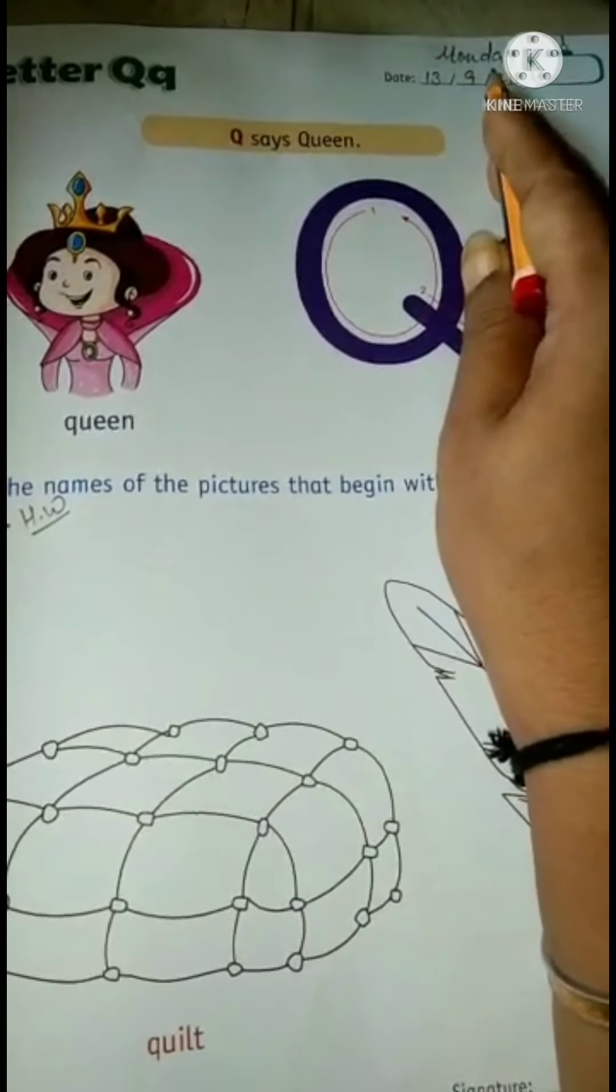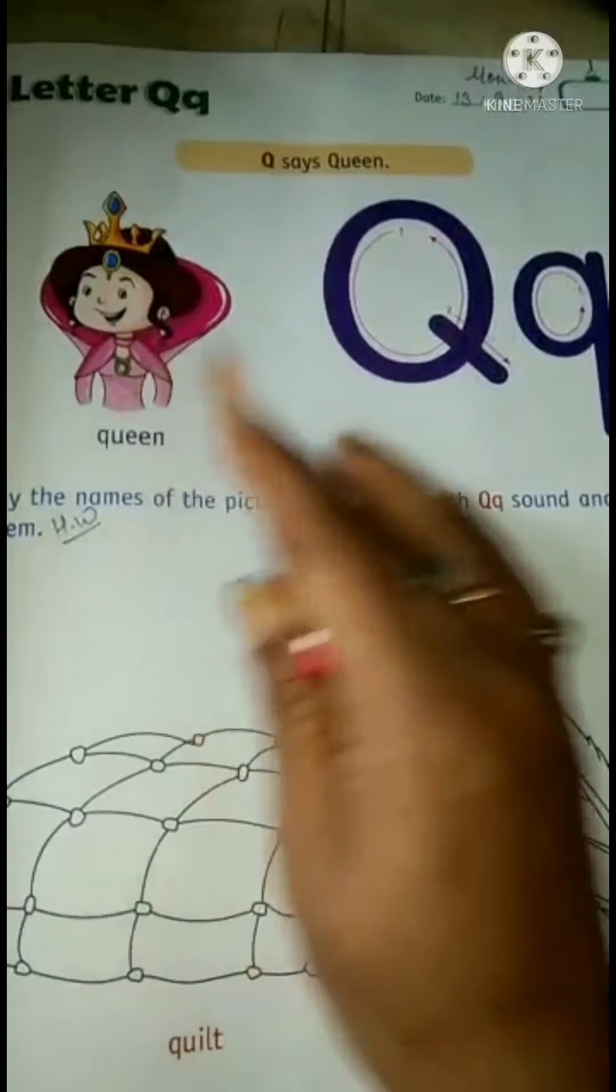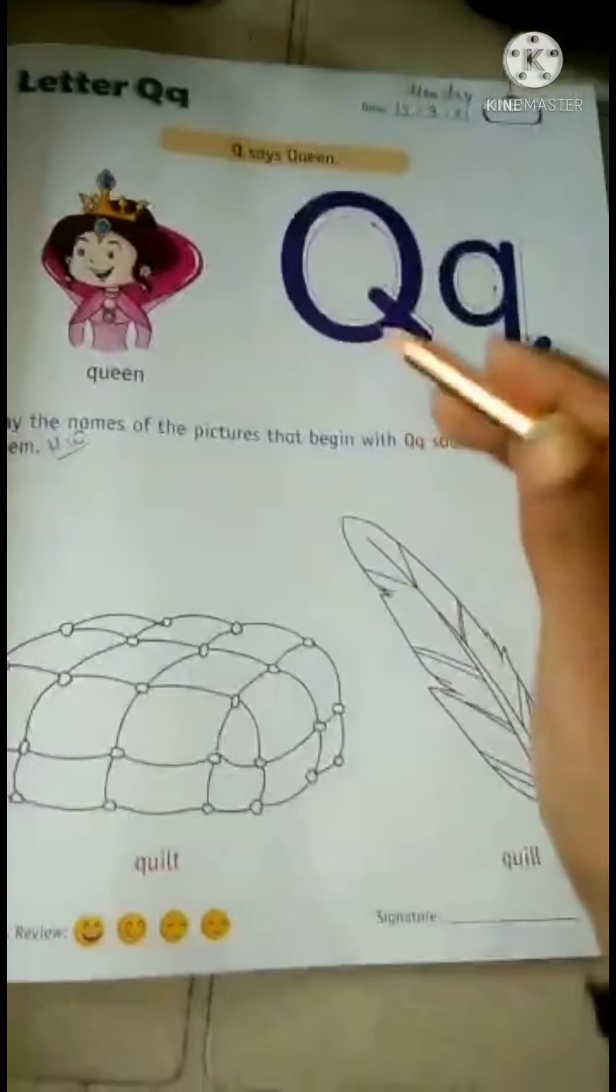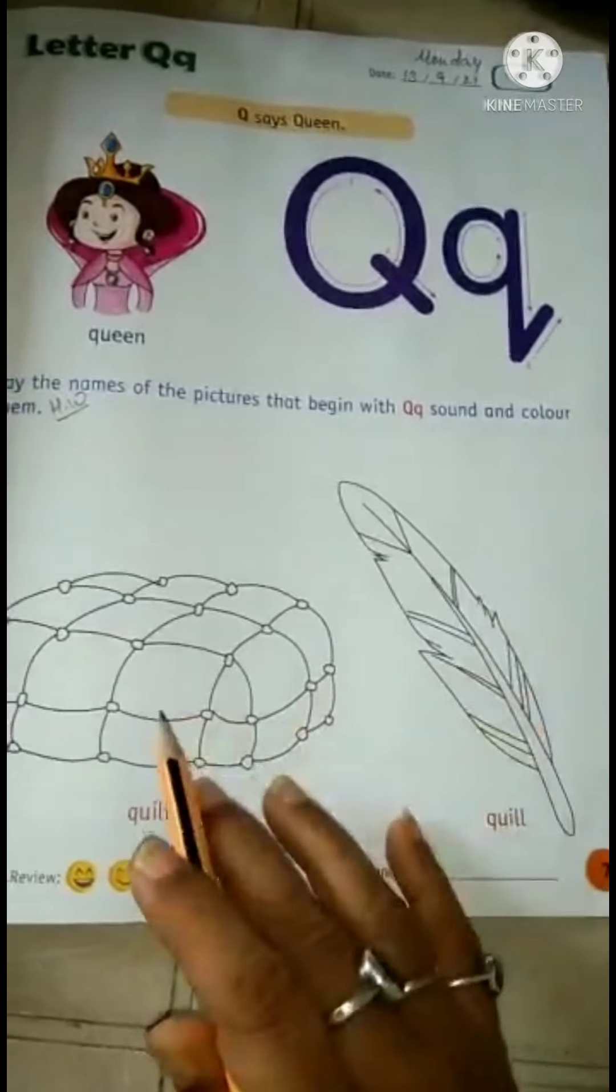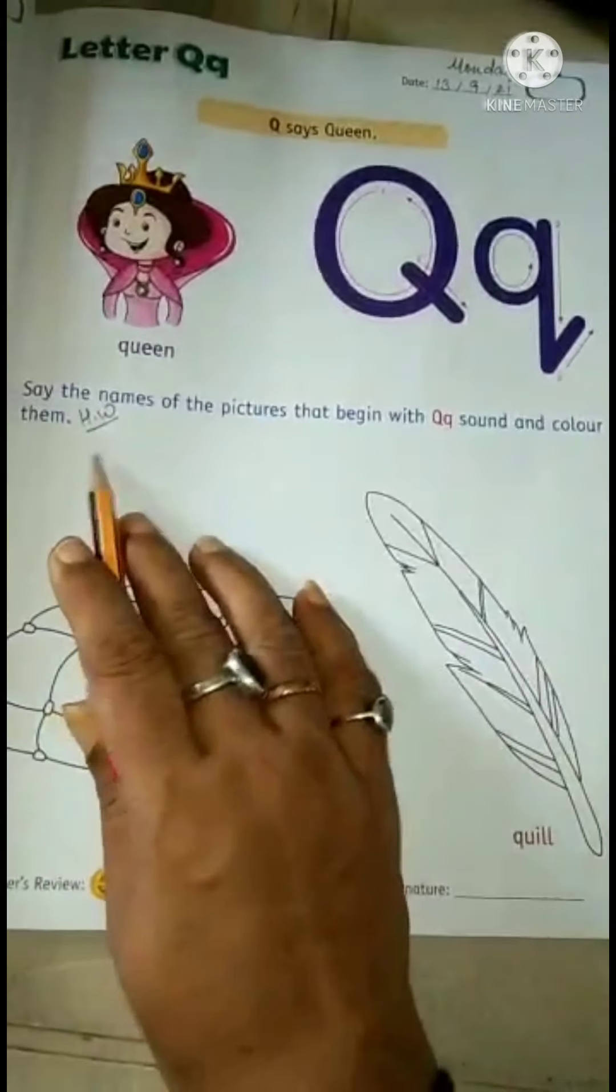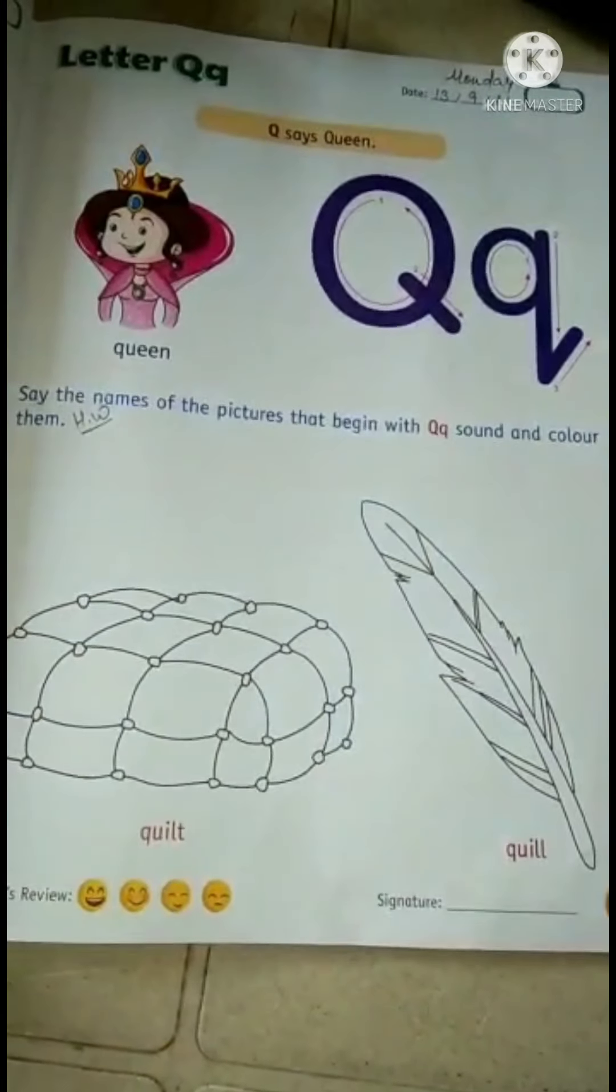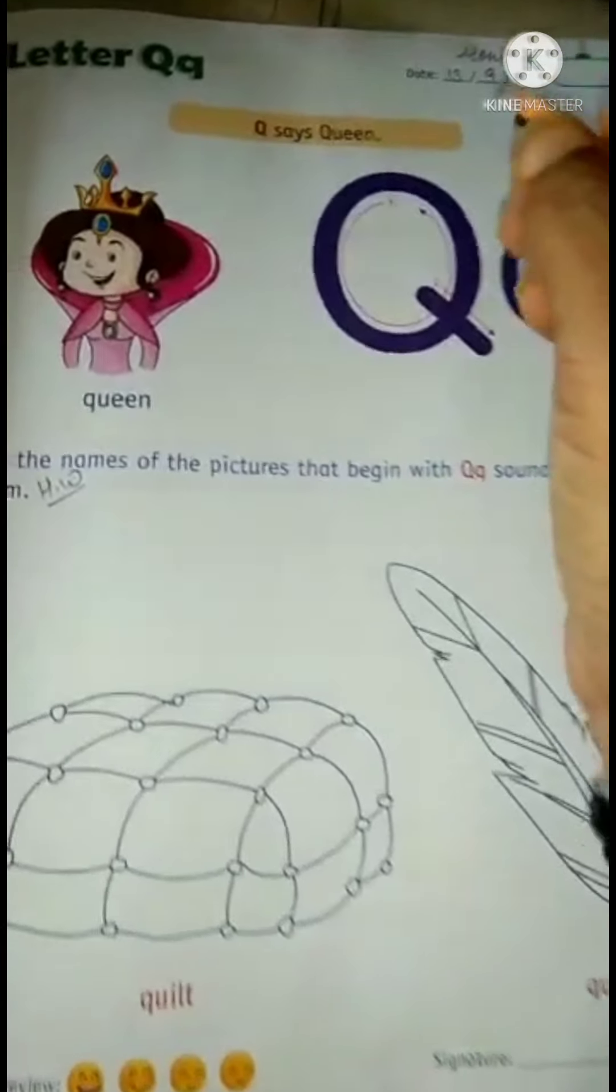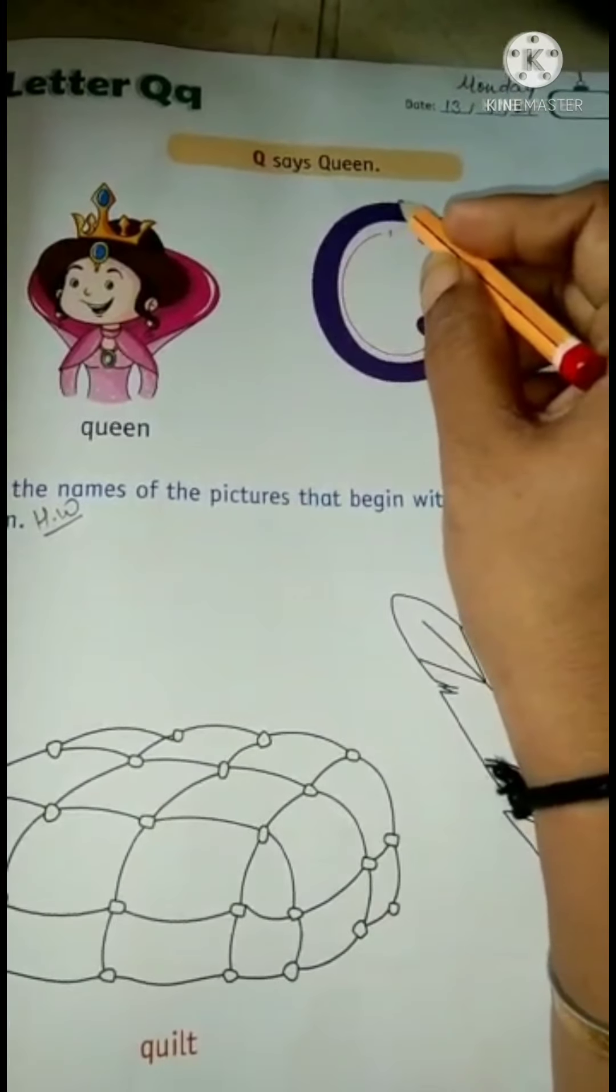Today is Monday. Q for Queen, Q for Quilt, Q for Quill. Now you know you have to color these two pictures, so please color it neatly. Now we will see how to trace and write capital letter Q.